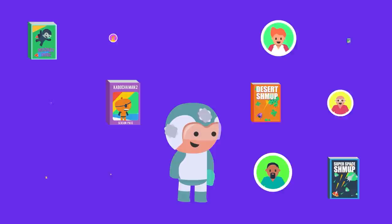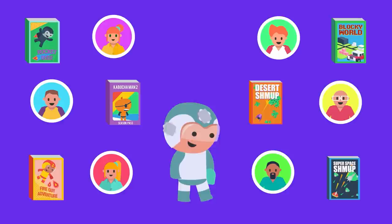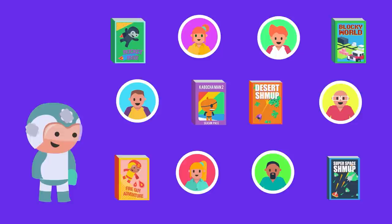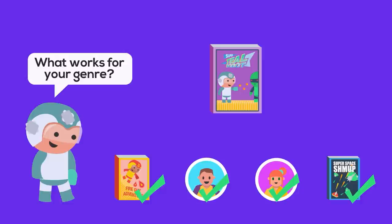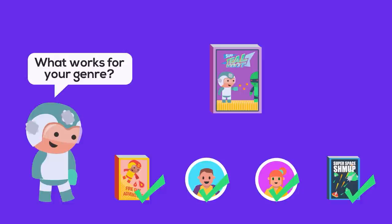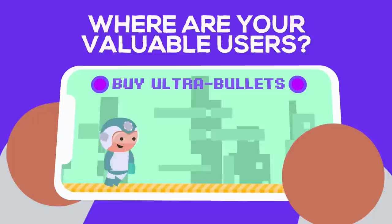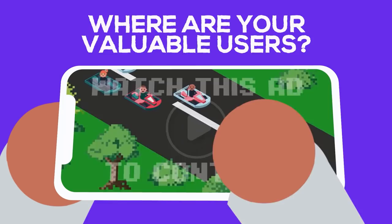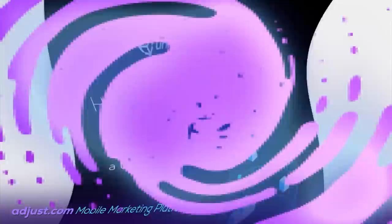Tip number 2: stick to your genre. Now that you have several games, devs, and studios as role models, you may have an opposite problem — there are too many paths you can take to reach your goal. One of the best ways to filter is to start with what works for your genre and model your game after that. Find other games similar to yours and study their monetization strategies. Some devs may find their valuable users in games with long play sessions and in-app purchases, while others may find them in short play sessions with interstitial ads — advertisements shown in the transitions between segments of gameplay. It may all depend on the genre.